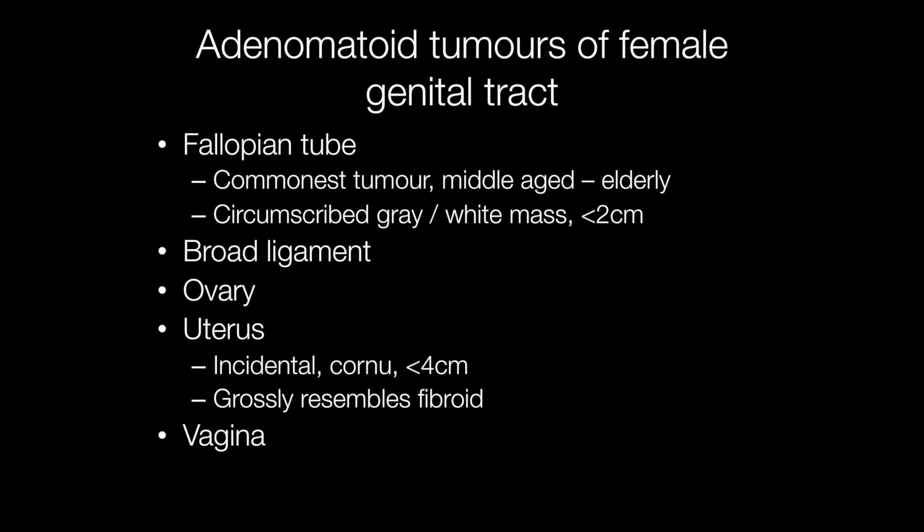In the female genital tract, common sites for adenomatoid tumours to occur include the fallopian tube, which is the commonest tumour arising in that location. Grossly they are well circumscribed with a grey or white cut surface and are usually two centimetres or less in diameter. These tumours are most frequently seen in middle aged and elderly ladies.